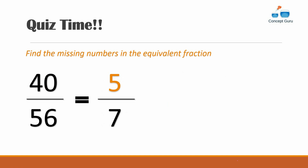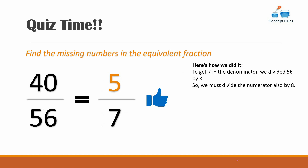Let's try another one — the missing number is five. To get 7 in the denominator, we divided 56 by 8, so we must divide the numerator by 8 as well. Great work!